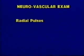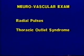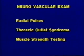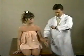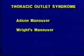The neurovascular exam is a cursory exam which includes radial pulses, test for thoracic outlet syndrome, and muscle strength testing of both upper extremities. The radial pulse is palpated and compared to the opposite extremity. The vascular exam includes provocative tests to evaluate vascular compression in the thoracic outlet. Keep in mind, the reliability of these tests is low.